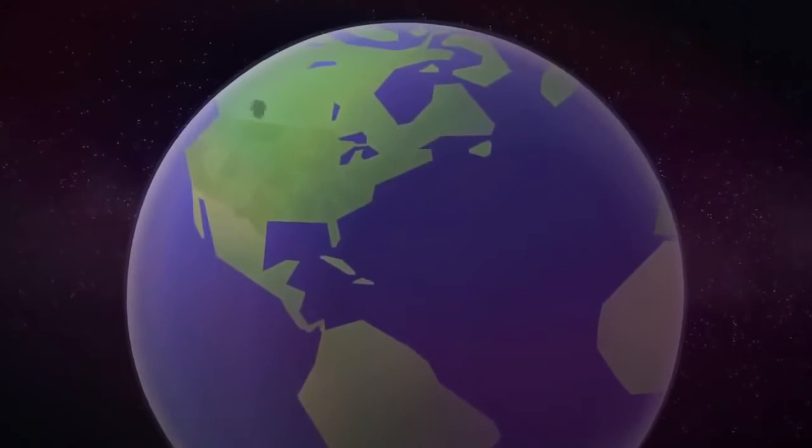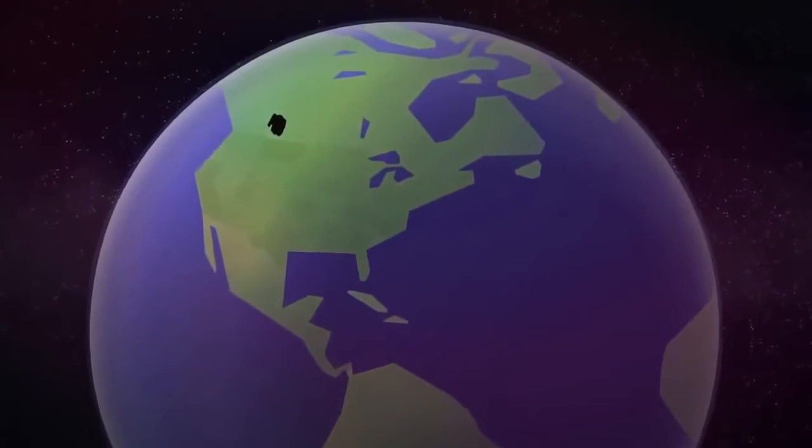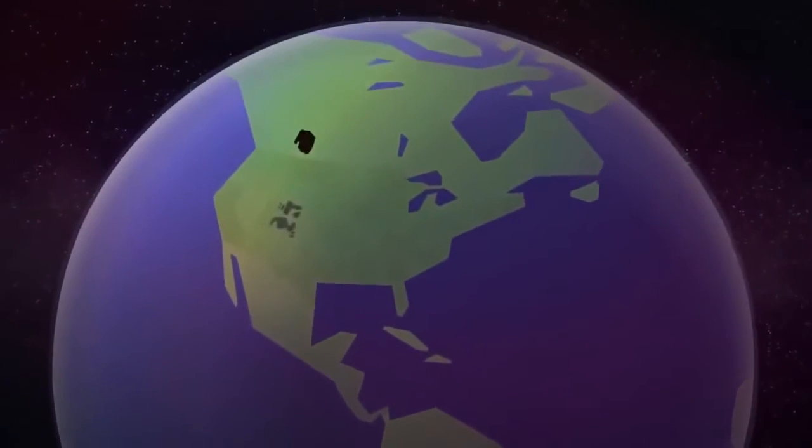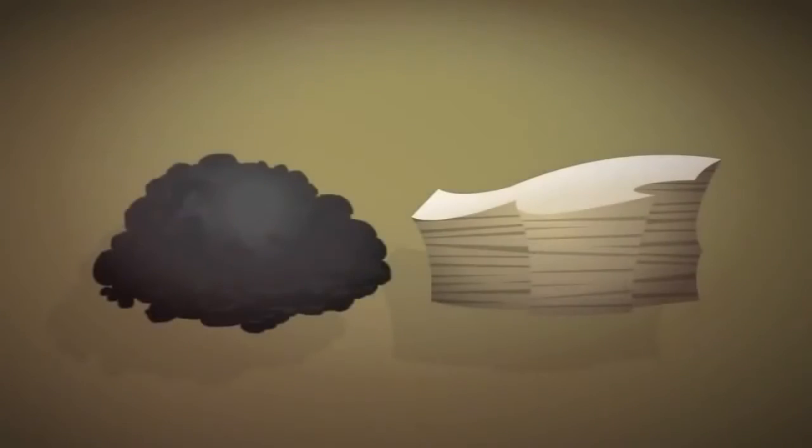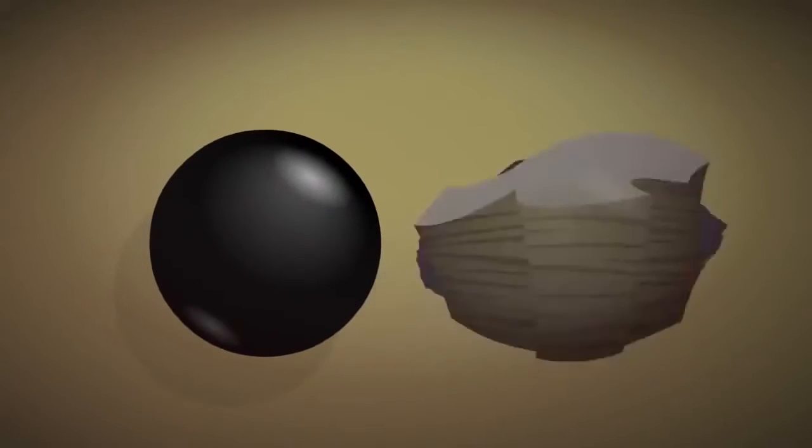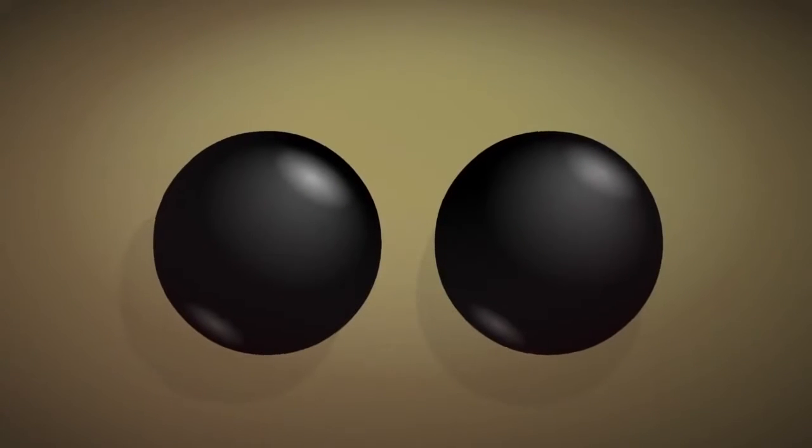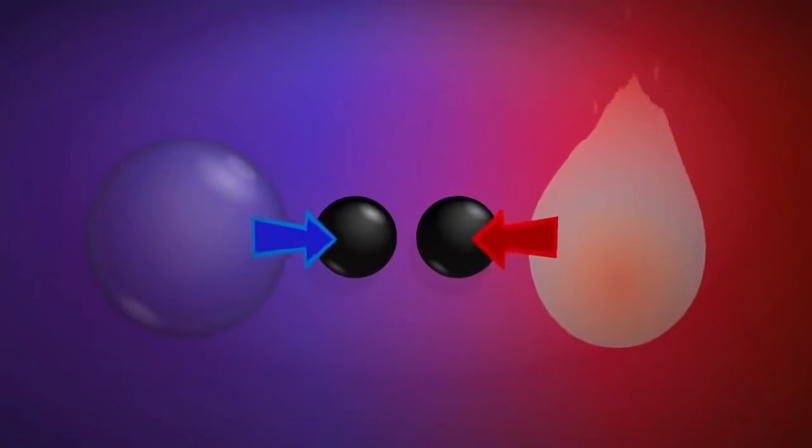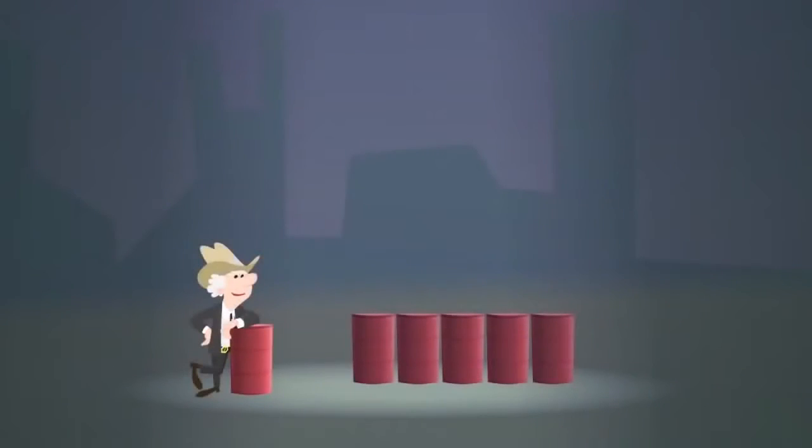Tar sands are found mainly in Canada. Two-thirds of the world's shale is in the US. Both of these fuels can be converted to synthetic crude oil. However, this requires large amounts of heat and fresh water, reducing their EROEI, which varies from five to as low as one and a half.